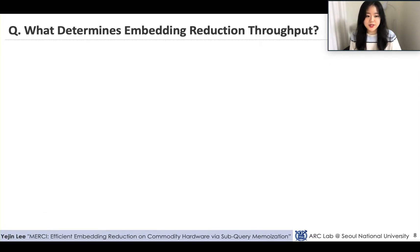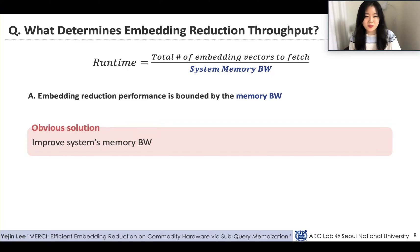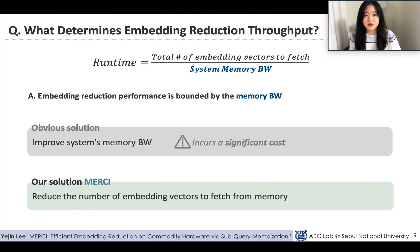To optimize embedding reduction, we need to find out what determines its throughput. Embedding reduction's throughput is known to be bounded by memory bandwidth, because it is a memory-bound operation and system memory bandwidth limits the number of embedding vectors that can be fetched per unit time. One obvious solution is to improve the system's memory bandwidth, but it incurs significant cost. A better approach is to reduce the total number of embedding vectors fetched from memory, and this is what MERCI aims to do.